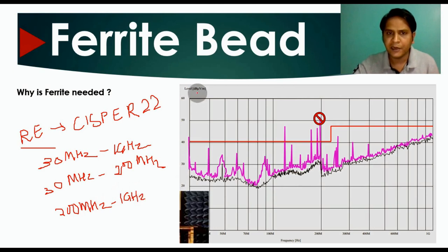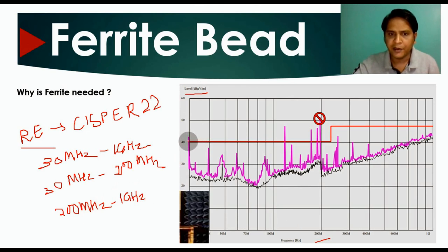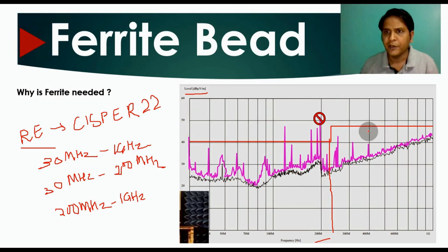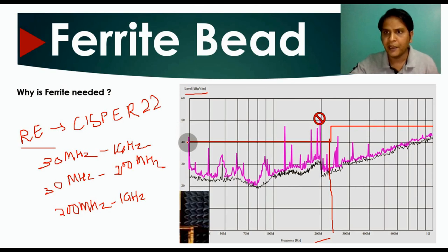The limit line scale is in dB microvolts per meter, with frequency in hertz on the x-axis. For the first band starting from 30 MHz, the limit is 40 dB microvolts per meter. Around 250 MHz there is a change in the limit, going from 40 to approximately 47 dB microvolts per meter.